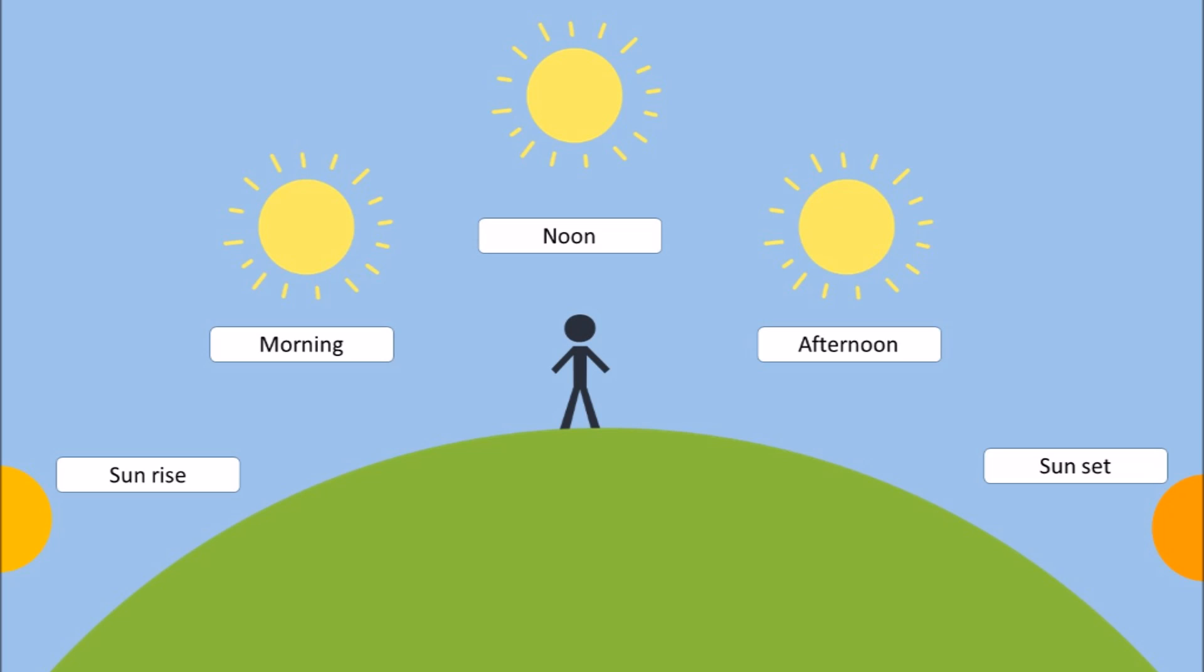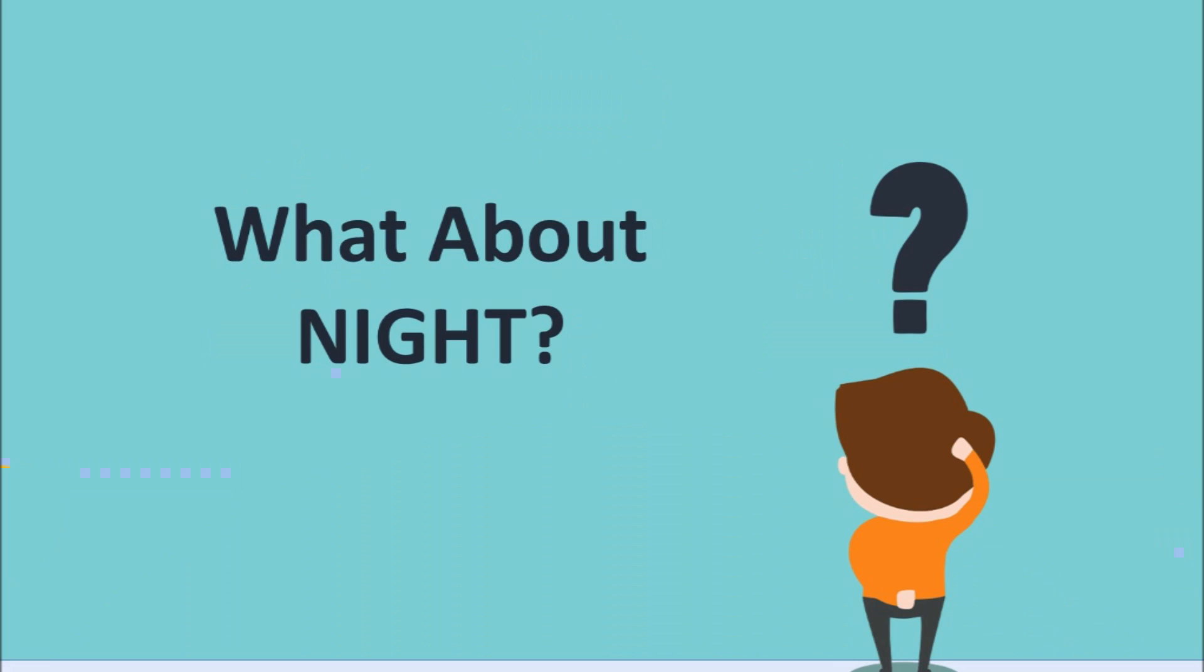During daytime: sunrise when sun appears on eastern horizon, morning when it is still rising, noon when it is highest in sky, afternoon when it is declining in sky, sunset when it appears at western horizon.